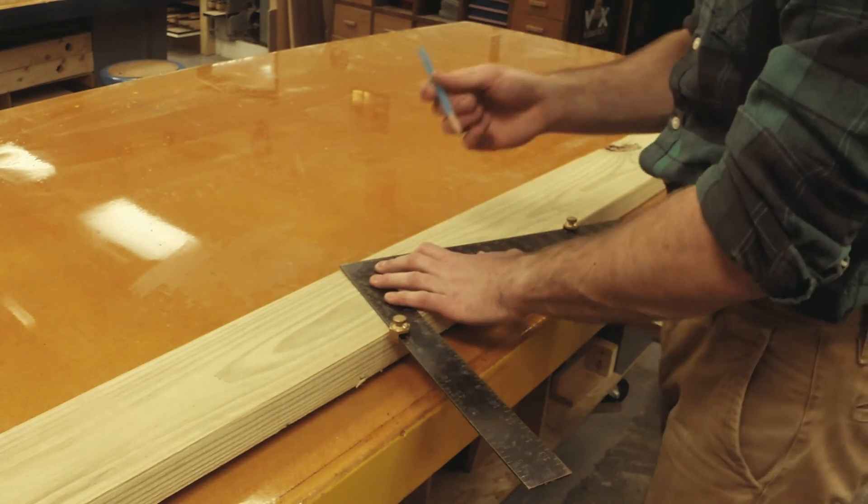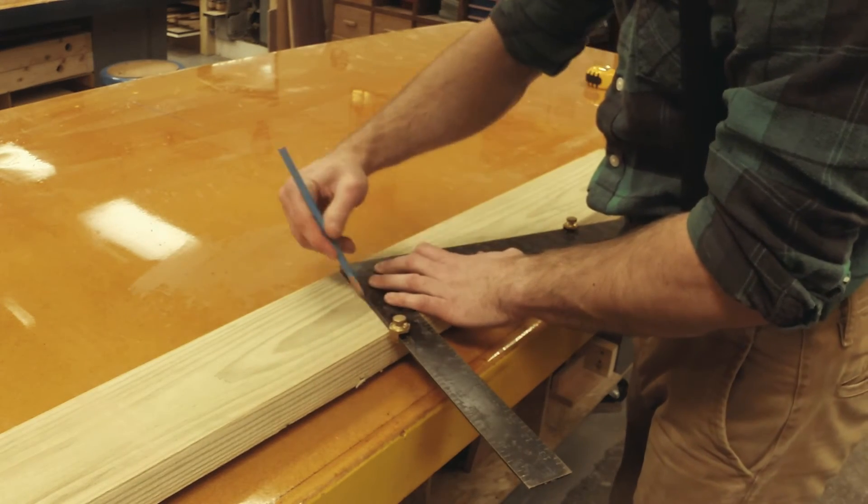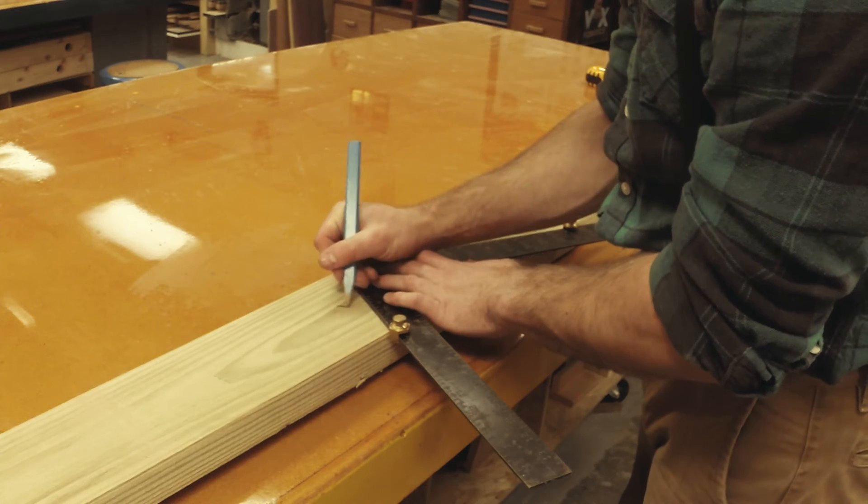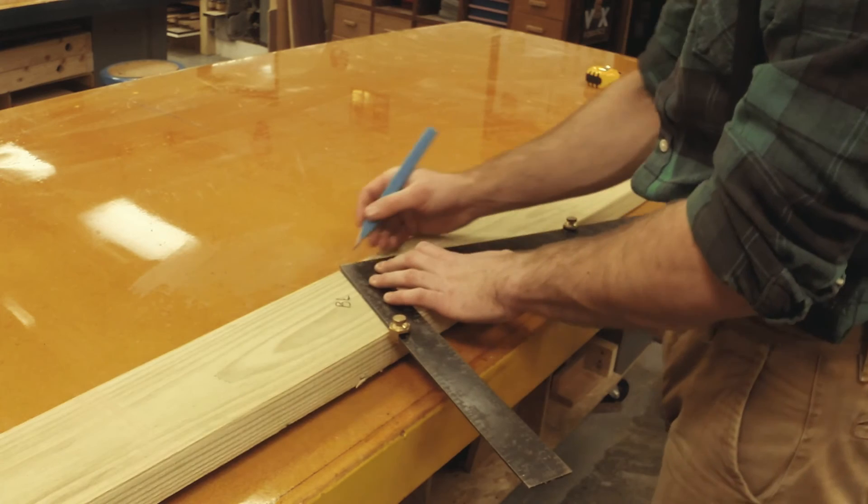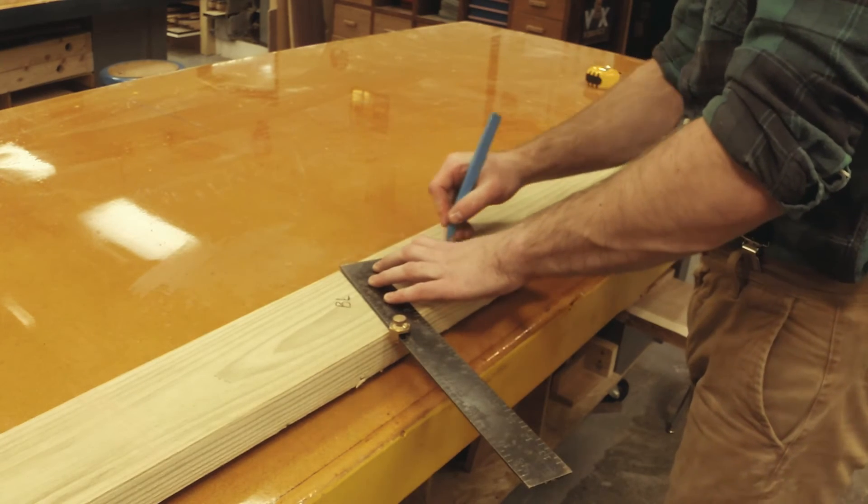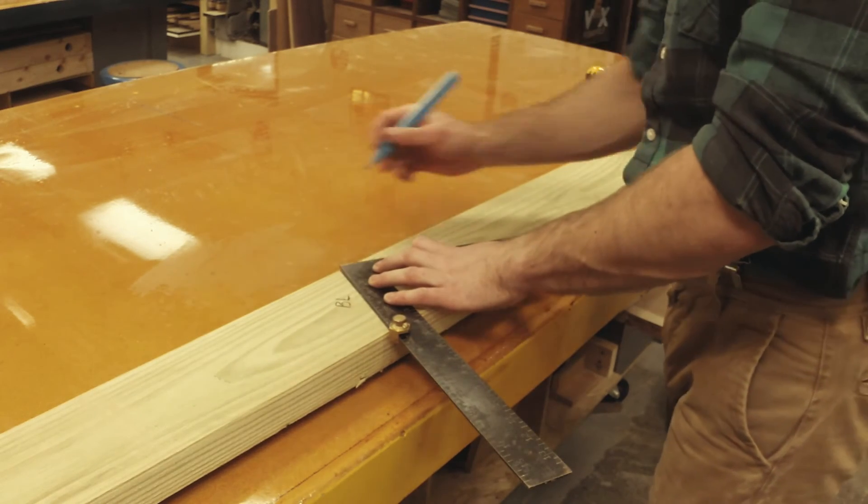First, I want to mark my building line, so I come in from the end of the board a ways to make sure there's plenty of room to add my eaves later. I trace the tongue of the square to get my building line and mark it BL. Then I trace the blade of the square, which accounts for 12 inches of run.